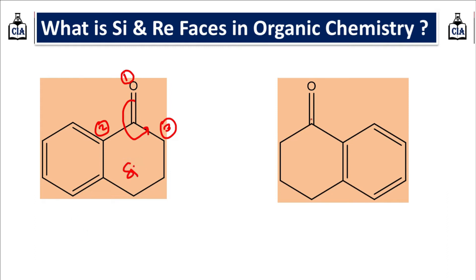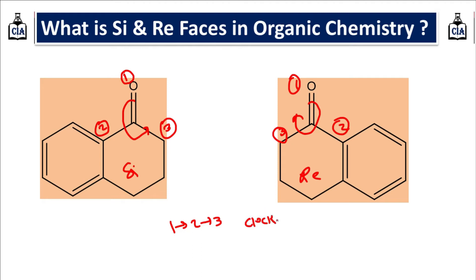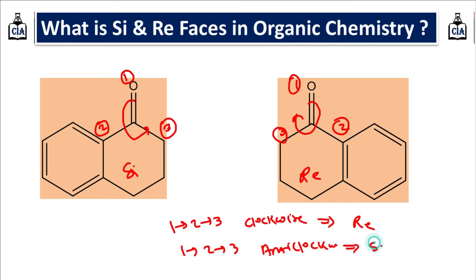Now for this second ketone, if we do numbering — oxygen is first, then 2 and 3 — the direction of the arrow is clockwise. So that face is called the re-face. Just keep in mind: if the arrow direction from 1 to 2 to 3 is clockwise, that face is the re-face. And if it is anticlockwise, that face is the si-face.